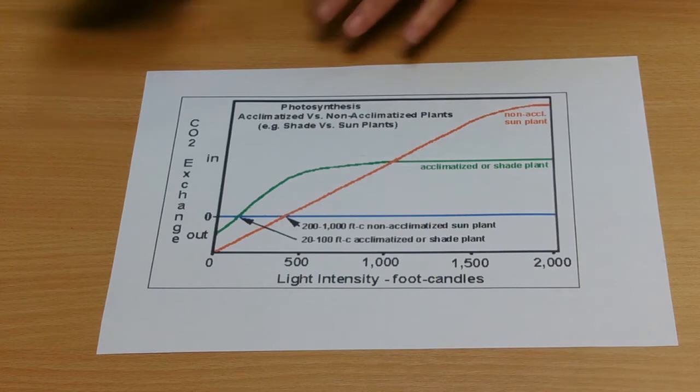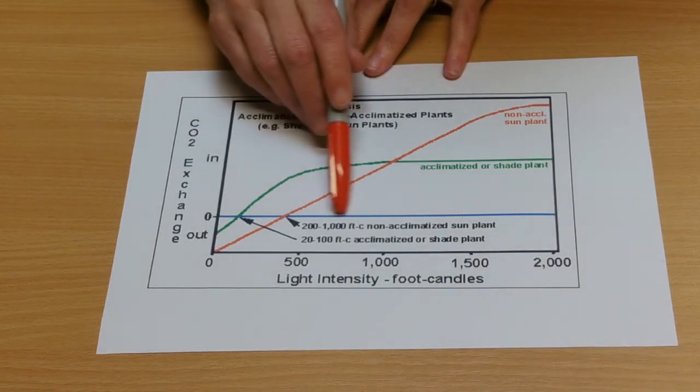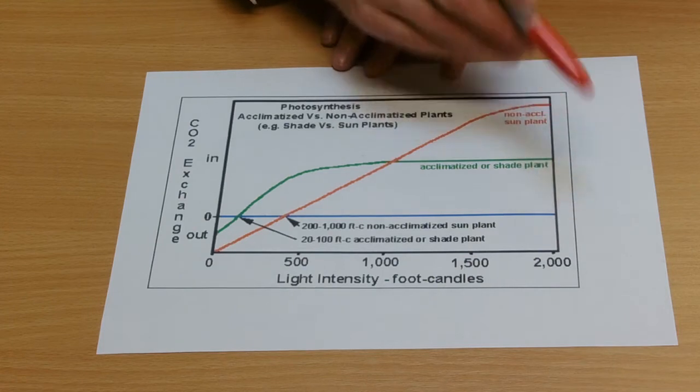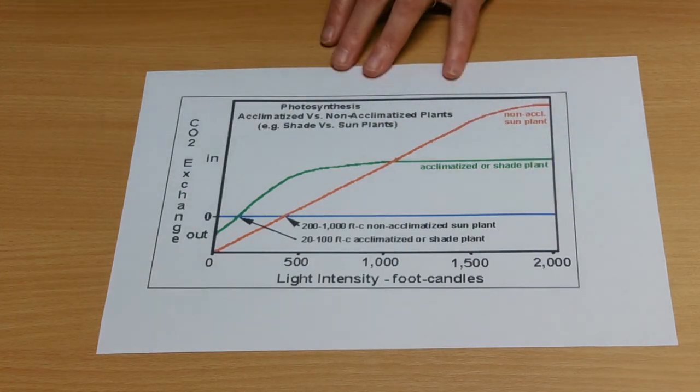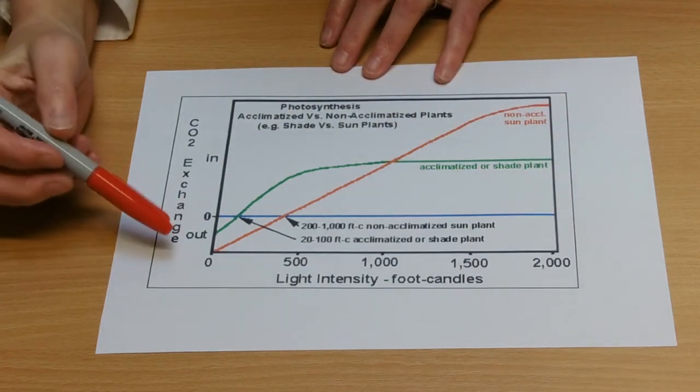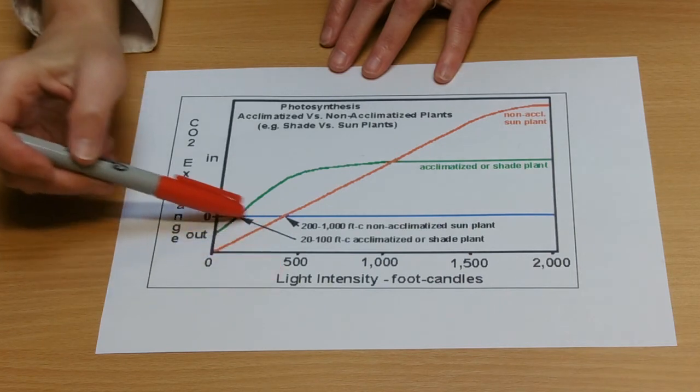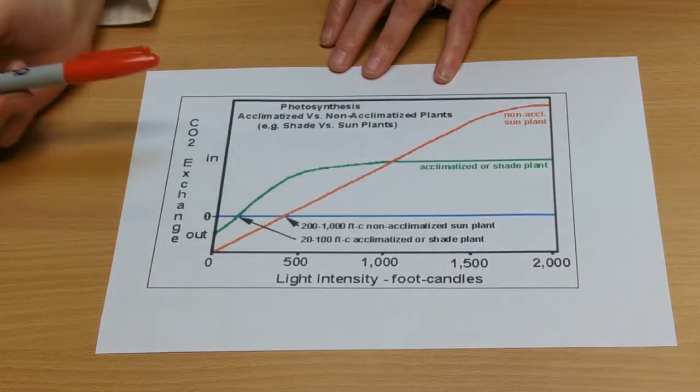So on this graph, this is quite a common graph to see, we've got a respiration rate that's constant. Apart from temperature, pretty much light intensity does not affect respiration rate, so that'll be a constant.